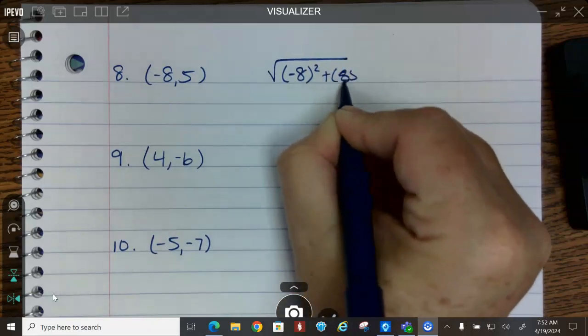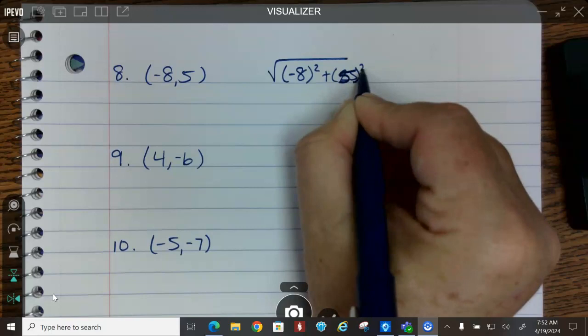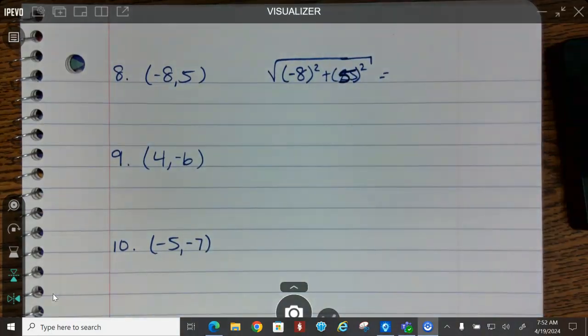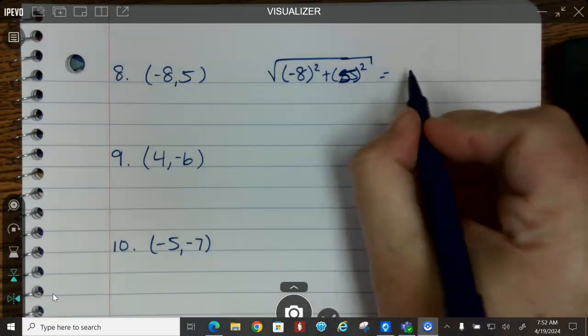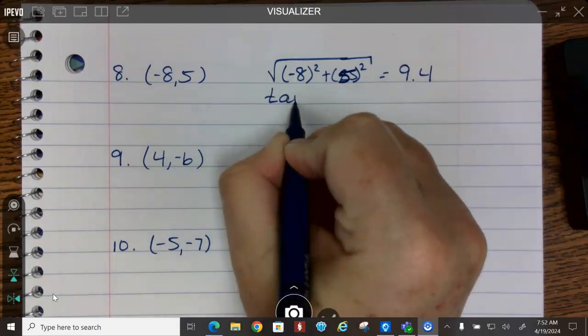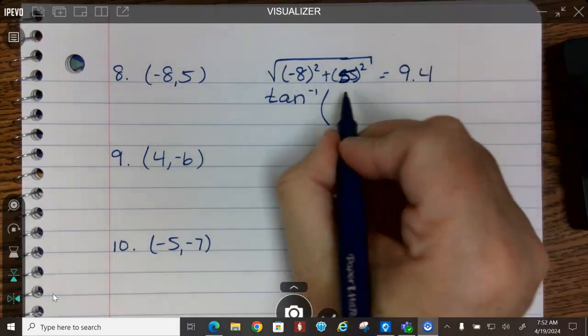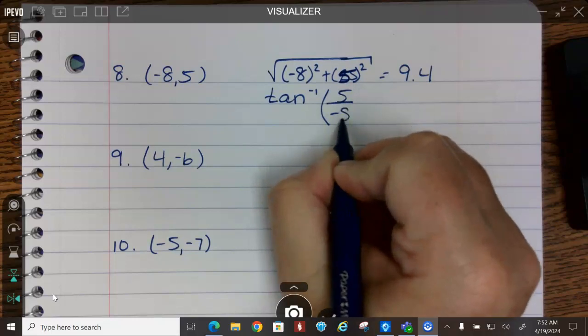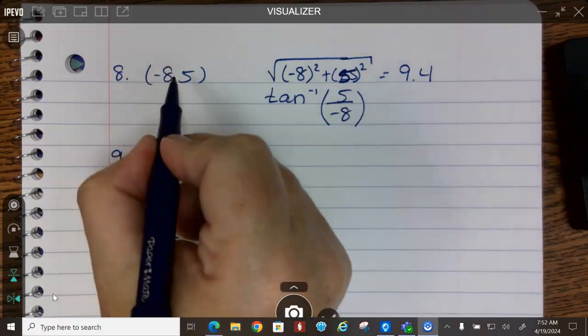Oops, I'm squaring the 5 already. Okay, so 64 plus 25 and square root. Uh-oh, something did not work. Okay, 64 plus 25 square root and we get 9.4. And then we're going to find our direction, and this is going to be the inverse tangent, exactly what we just did, y over x.